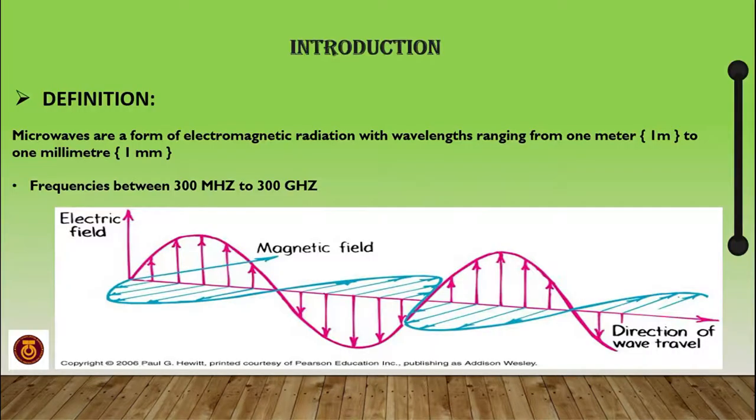So first, what is microwave transmission? Microwaves are a form of electromagnetic radiation with wavelengths ranging from one meter to one millimeter and frequencies that lie between 300 megahertz to 300 gigahertz.